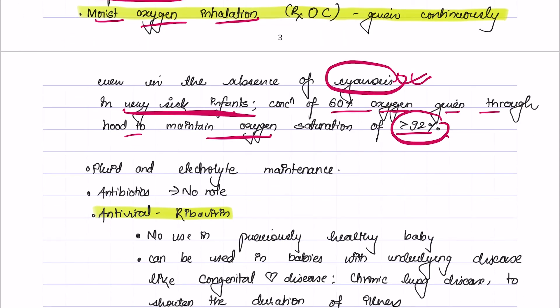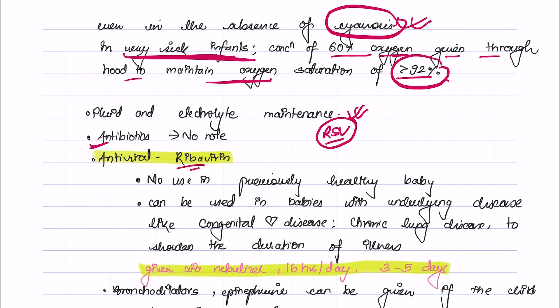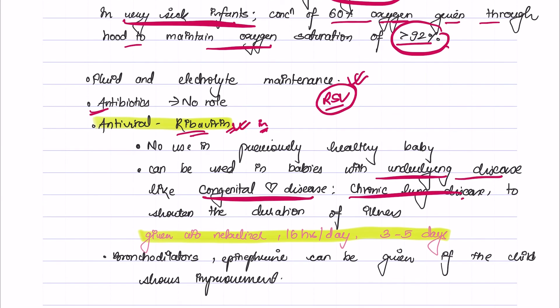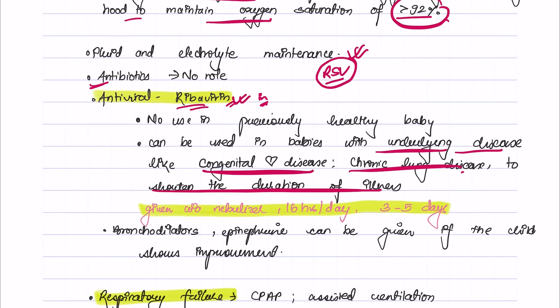Fluid and electrolyte maintenance should be done. Antibiotics have no role in bronchiolitis as it is caused by a viral agent, mostly RSV. Antiviral drugs like ribavirin may be useful. It is usually not used in patients who were initially healthy, but in patients with underlying diseases like congenital heart disease or chronic lung diseases, ribavirin may be used to shorten the duration of illness. It is given by nebulizer 16 hours per day for three to five days.